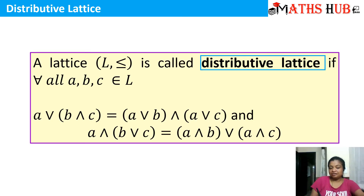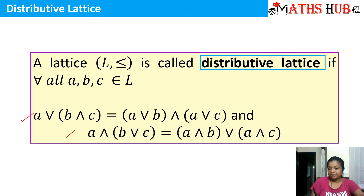So if any three elements satisfy both the properties, and all pairs present in the lattice satisfy each of the two properties, then we say that the given lattice is distributive.